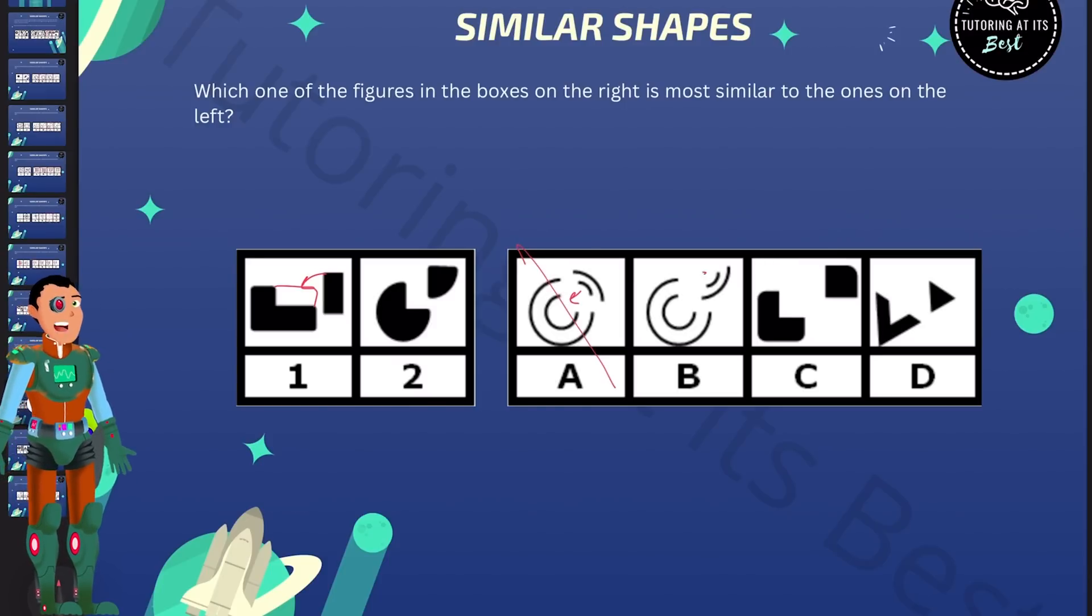So instantly we know that A wouldn't need to be rotated. That can just be put in. B looks as if that rotation would actually work. Let's come back to it. C doesn't look like the rotation would need to work, and likewise with D. So B is now our answer. And there we are.